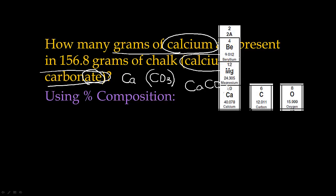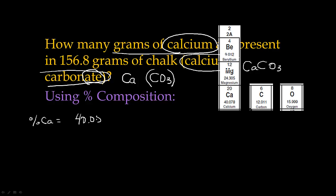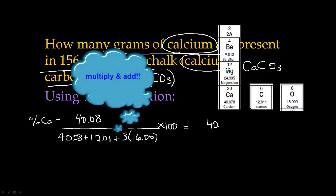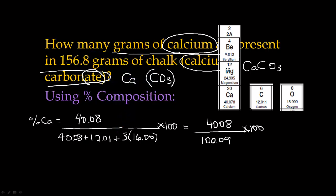Next step: find the formula mass for calcium carbonate. The percent calcium equals the atomic mass of calcium (40.08) divided by the molar mass of the entire compound: one calcium (40.08) plus one carbon (12.01) plus three oxygen atoms (16.00 each), times 100. The denominator works out to 100.09, so it's 40.08 divided by 100.09 times 100, which equals 40.04% calcium.